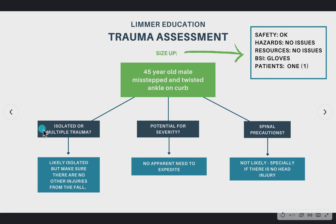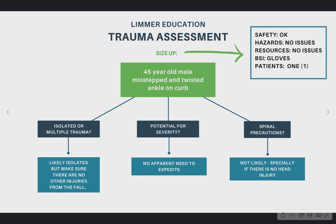Is this isolated or multiple trauma? He has a complaint of a twisted ankle — that sounds like an isolated injury. However, if he did fall, we should really make sure he didn't strike his head or have an outstretched arm. If he has a very serious ankle fracture with a lot of pain, he may have an injury somewhere else that's being masked by that pain. So we're going to say this is probably isolated. Potential for severity — probably not a need to rush to the trauma center. And spinal precautions for this isolated injury are probably much less likely.